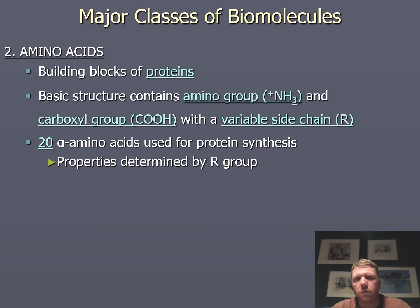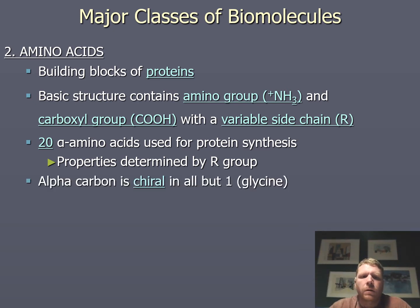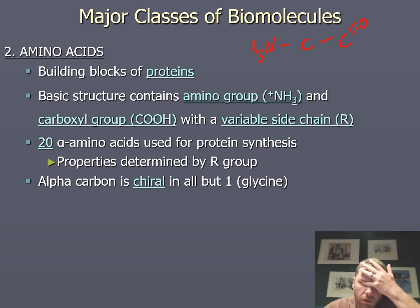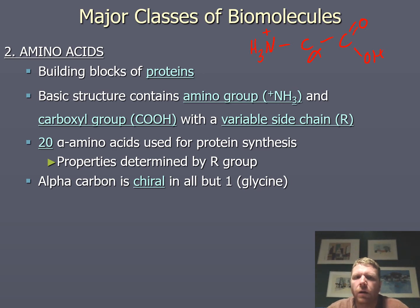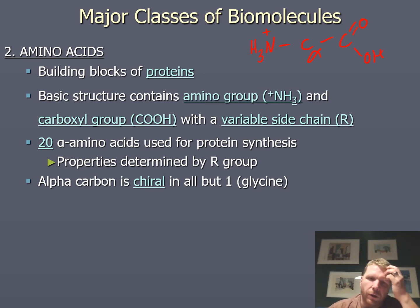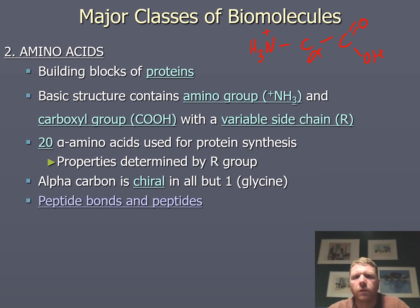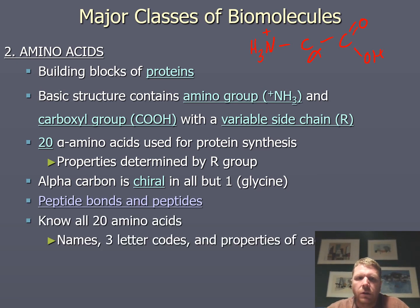There are 20 proteinogenic amino acids — they have an NH3+ and a COOH group. The alpha carbon is the carbon that connects to the NH3. I think of the backbone as: alpha carbon in the middle, with the amino terminus and the carboxyl terminus. Every single amino acid is chiral except for glycine. You will need to know all 20 amino acids — the names, the three-letter codes, and the properties of each. I will give you the structures on exams, but you'll need to be able to identify them from the structure.